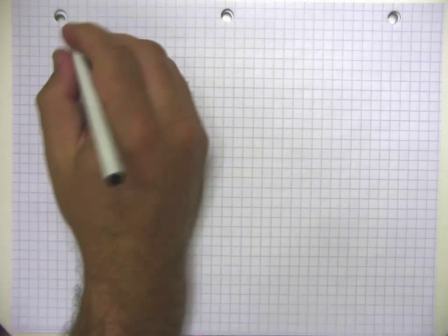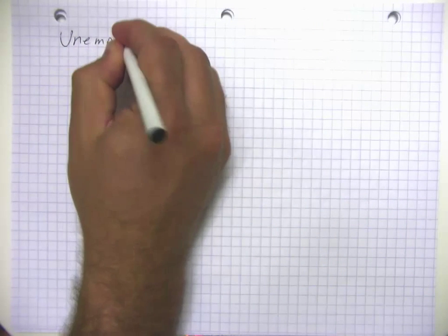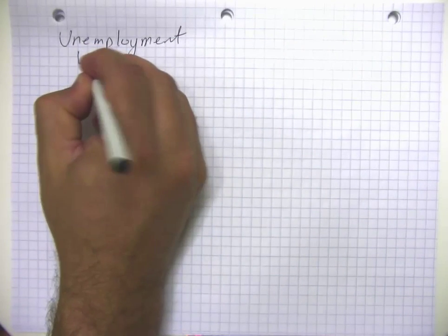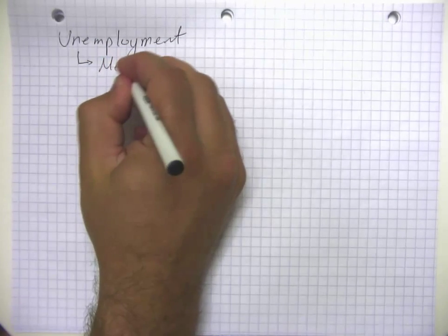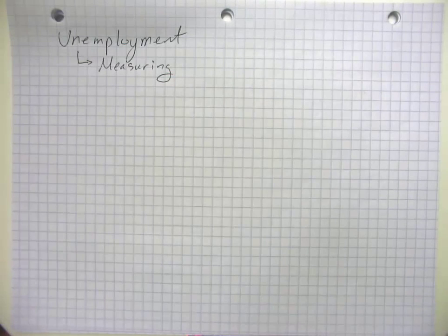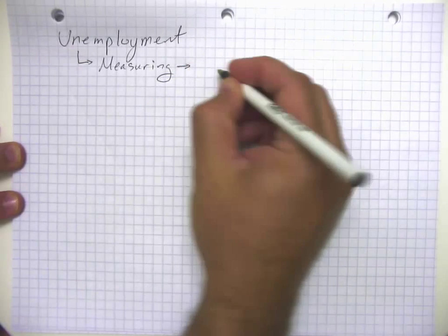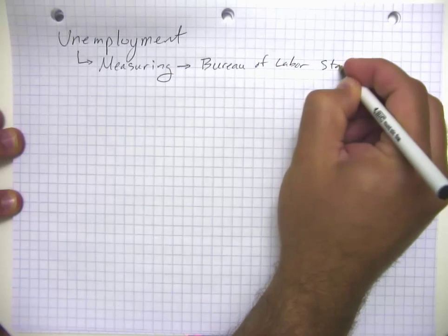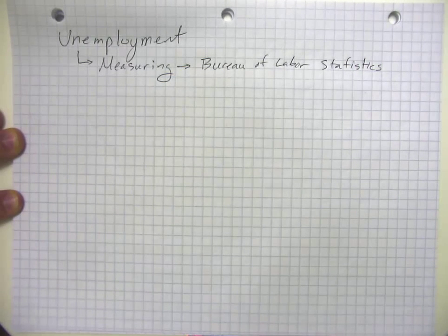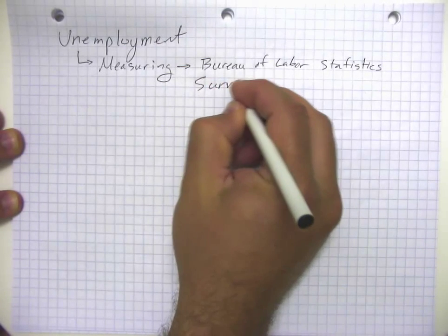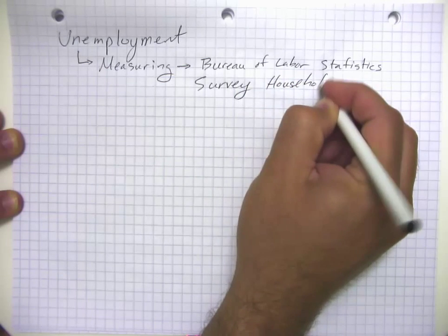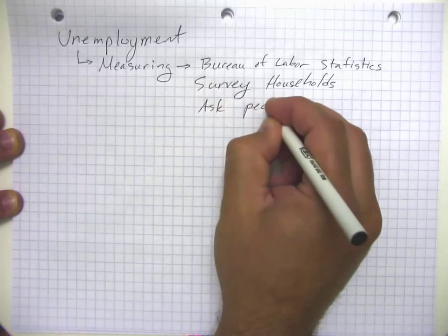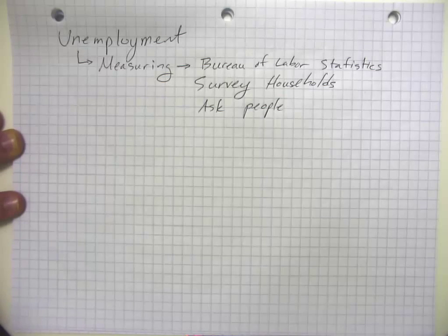Let's start a series of video lectures on unemployment. On one level we all know what unemployment is, but actually measuring it requires getting into the details. We'll start with the official unemployment rate from the Bureau of Labor Statistics — the same people who brought us the CPI, the Consumer Price Index. Every month they go out and survey households, asking people whether they were employed, unemployed, or not looking for work.